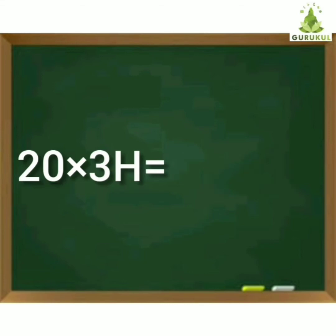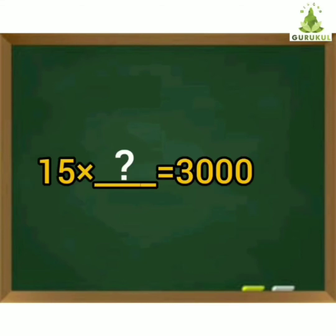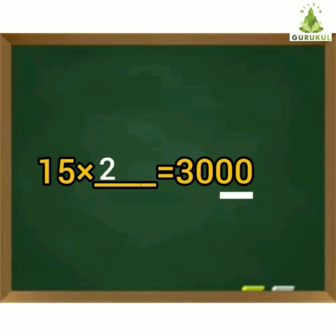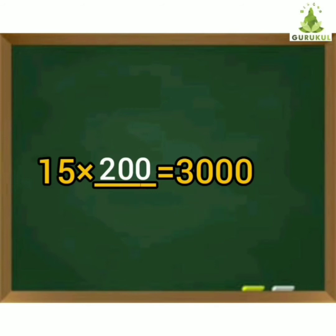Solve: 15 multiplied by which number gives the answer 3,000? Children, tell me — 15 zeros are 30. If I write 2, still 2 zeros are left. So put 2 zeros in front of 2 — it becomes 200. So 15 multiplied by 200, the answer is 3,000.